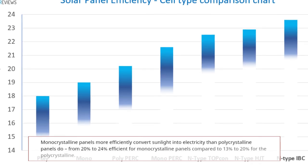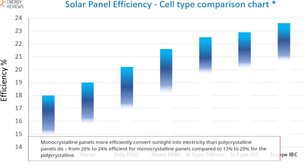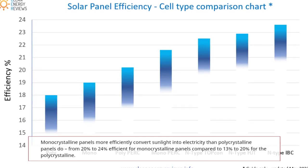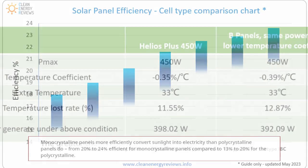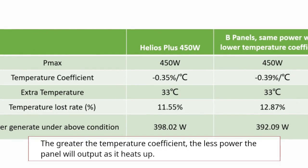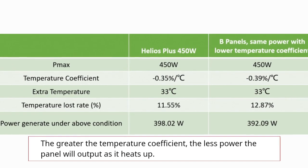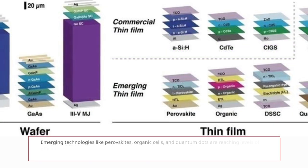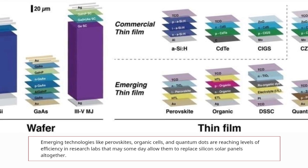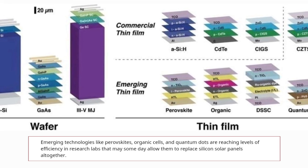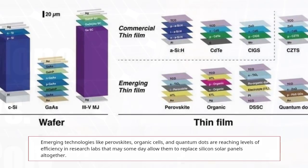Monocrystalline solar panels convert sunlight more efficiently than polycrystalline, ranging from 20 to 24 percent efficiency compared to 17 to 20 percent for polycrystalline. The greater the temperature coefficient, the less power the solar panel will output as it heats up. Emerging technologies like perovskite, organic cells, and quantum dots are reaching levels of efficiency in research labs that may someday allow them to replace silicon solar panels altogether.